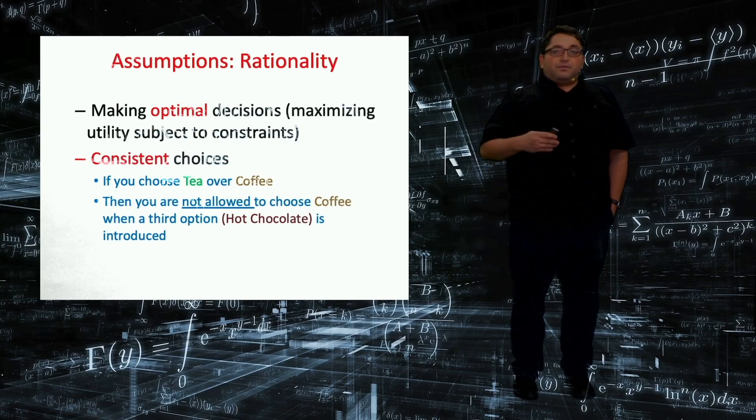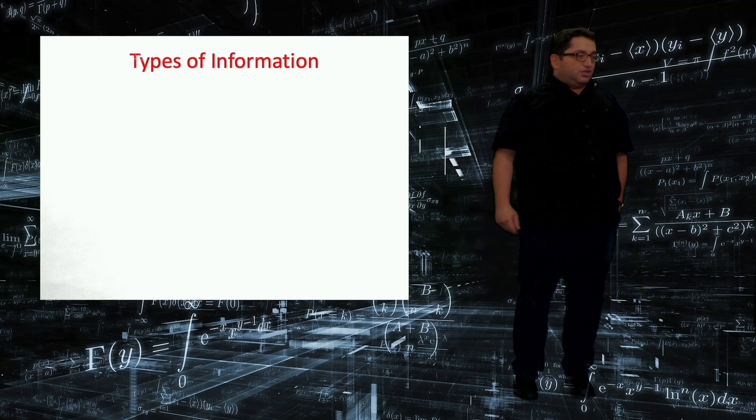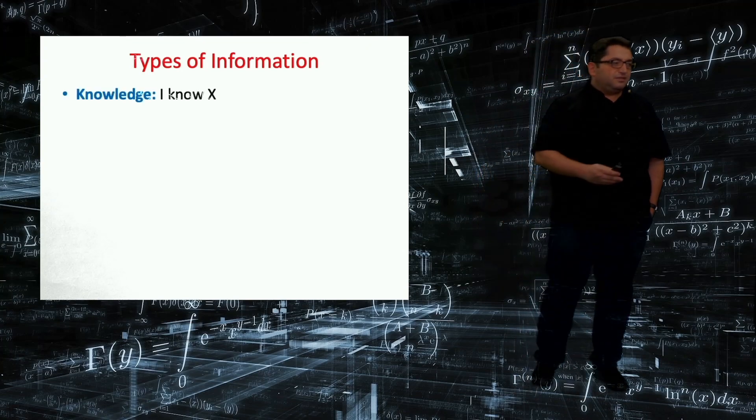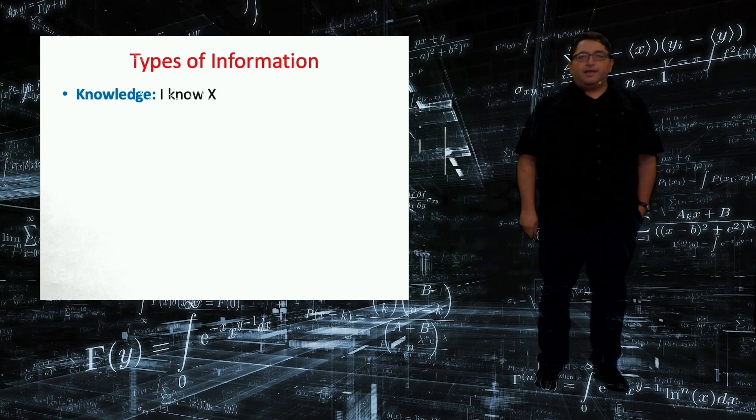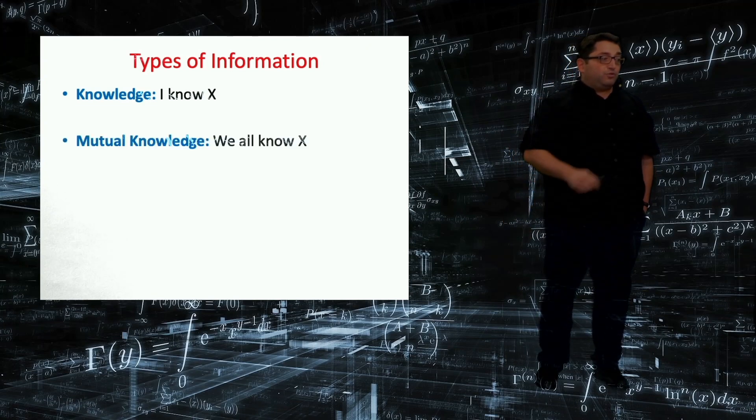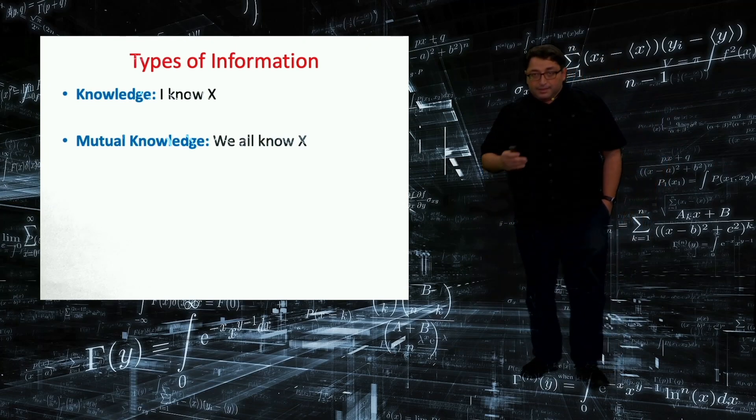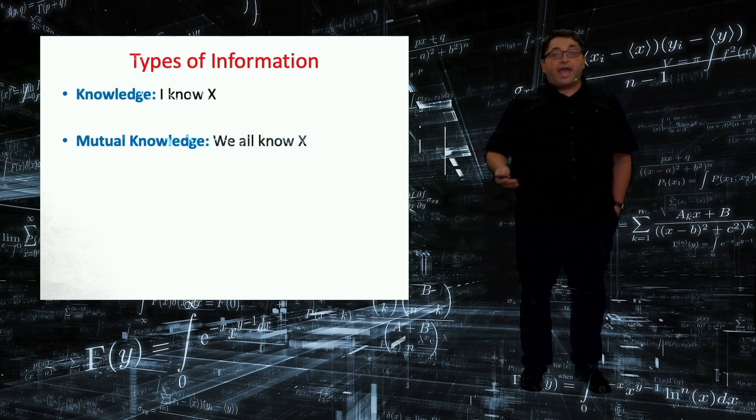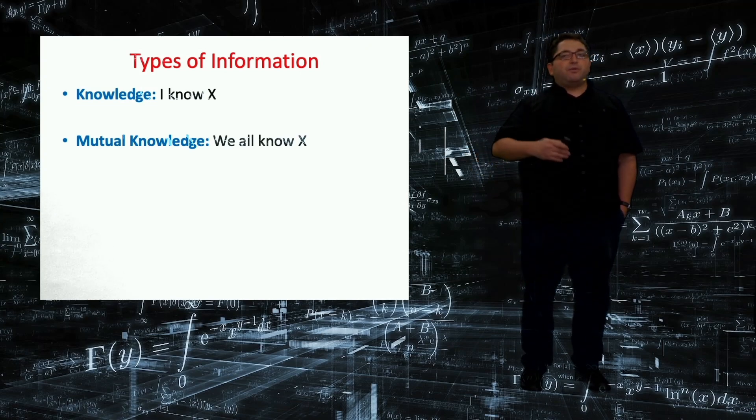So let's talk about different types of knowledge, different types of information. So the standard knowledge would be, I know something. So I know, say, rules of the game. We call it X. That's knowledge that we all know about. And the second level would be mutual knowledge. Everybody knows X. Say, everybody knows the rules of the game, the rules of the chess game.